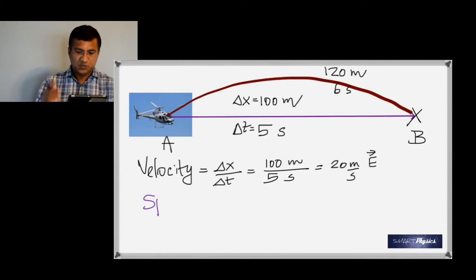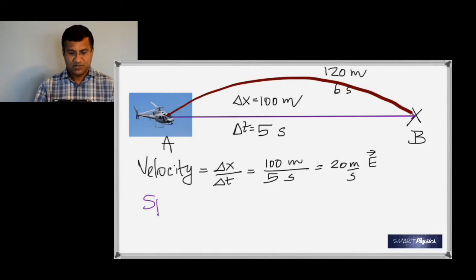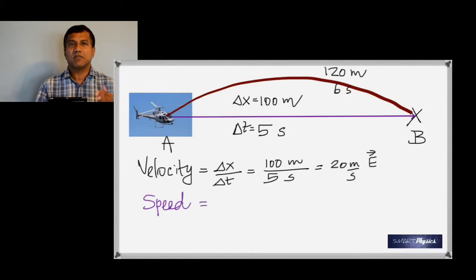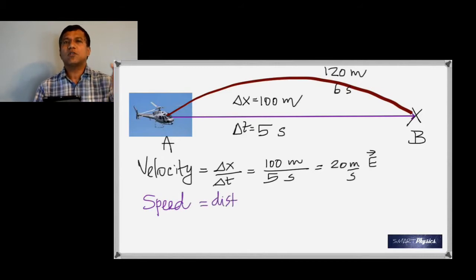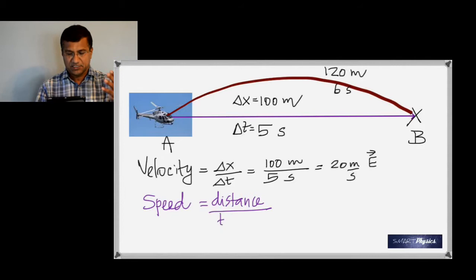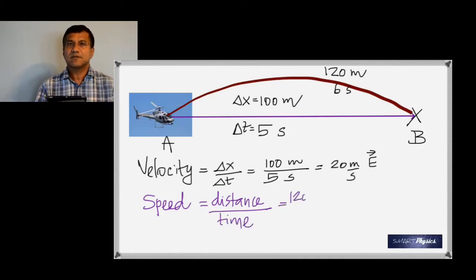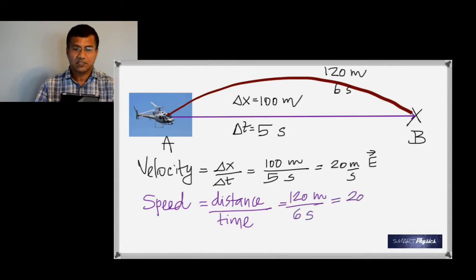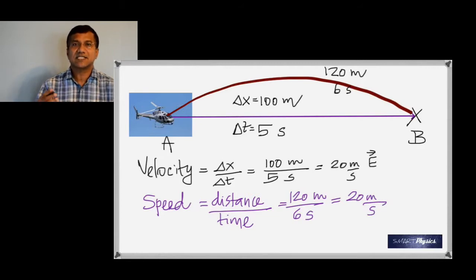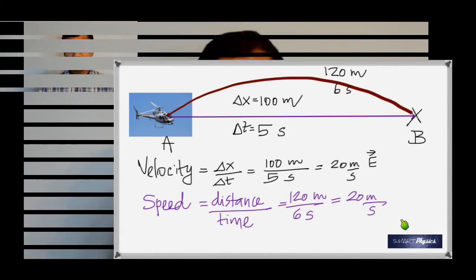The speed, however, is the distance divided by time — and distance is measured along the actual path traveled. So it's 120 meters divided by six seconds, giving a speed of 20 meters per second. Notice there is no direction associated with speed because it is a scalar quantity.